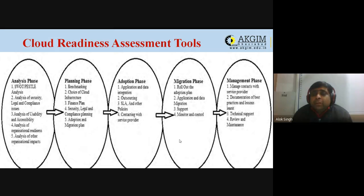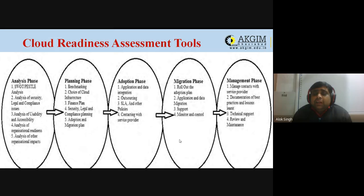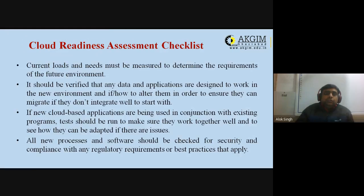Next is technical support — what type of technical support you require in subsequent years and what audit mechanisms you will put in place to check whether things are working well, provided by your cloud vendor. Next is review and maintenance — checking for duplicacy, redundancy, or errors and resolving them to run your functions smoothly. These are the tools and techniques for different phases of cloud readiness assessment.